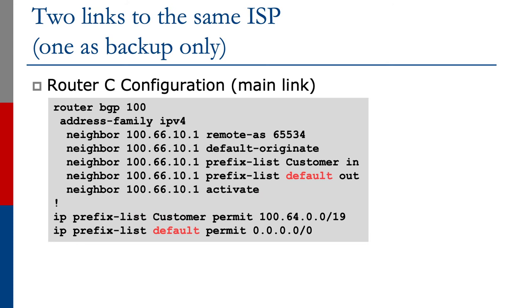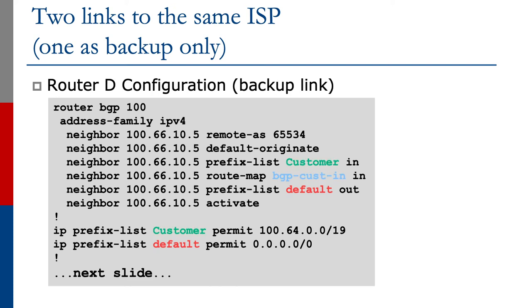Router C's configuration is the ISP router on the main link. It has customer-in and default-out, where default-out permits just the default route — no LE or GE, just permit 0.0.0.0/0. For router D on the backup link, in addition to default-out, there is a prefix list for the customer inbound, and importantly a route map that applies the local preference, which is shown on the next slide.